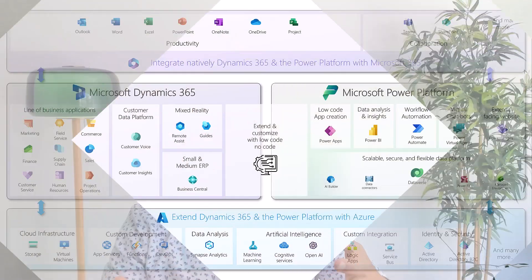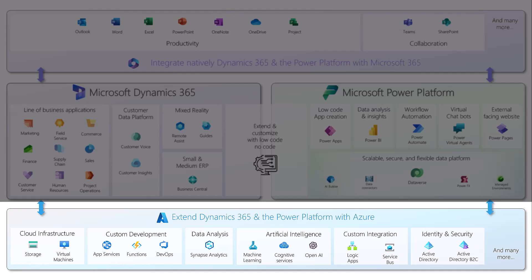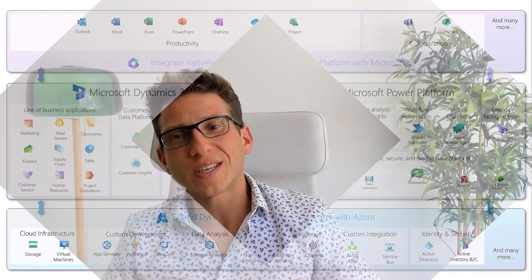This helps your company remain agile and adapt to changing market conditions, and improves staff productivity by rapidly deploying applications. The second major benefit is that the Power Platform is tightly integrated with the Microsoft ecosystem. If your company uses Microsoft 365 — Outlook, Word, Excel, Teams, SharePoint — those applications natively integrate with the Power Platform. And if you need additional capabilities, you can use Azure to extend the platform, whether for large file storage or advanced AI capabilities using Azure OpenAI.